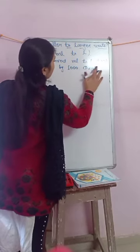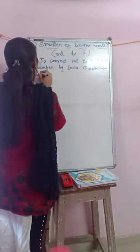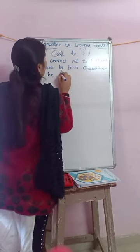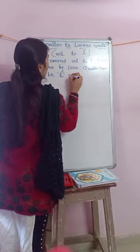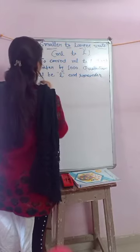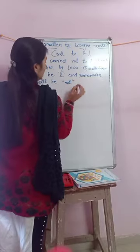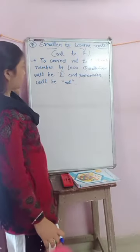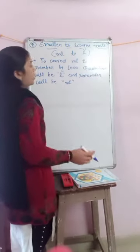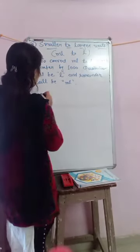When you divide by one thousand, the quotient will be liters and the remainder will be milliliters. You have to divide by one thousand. The quotient will be liters and the remainder will be milliliters. Let's check an example.